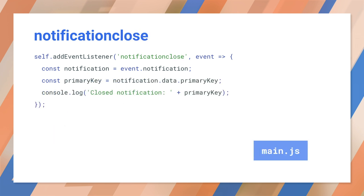In a notification click handler, you can determine which action button the user pressed by inspecting the action property on the event object. Note that each browser displays notification actions differently, and some don't display them at all. So to compensate, we put a default experience in an else block after checking which action was clicked, so that something will happen on a simple click of the notification.